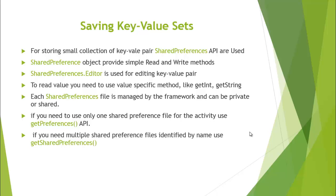There are two ways to store data into SharedPreferences files. One is a default file where you don't specify the name of the file — it's a default file maintained by the system. You just store the value into the file and access the value from the file, and to do that we use the getPreferences API. The other way is where you specify a file name along with the shared mode, then read from or write into that file, and to do that there is an API called getSharedPreferences.